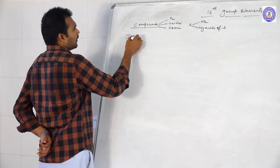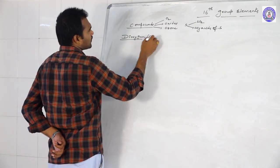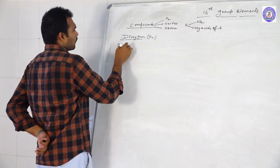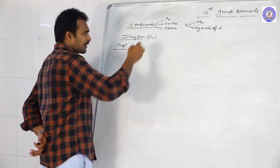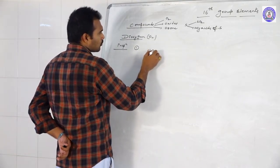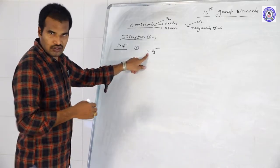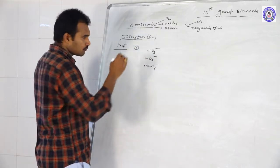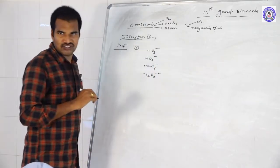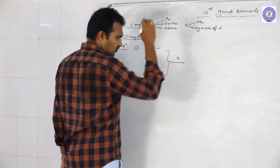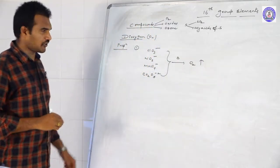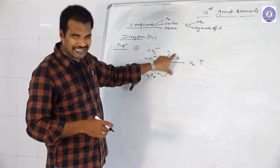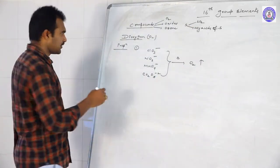The first one is Dioxygen. I'll give you the important points about Dioxygen — how to easily remember the preparation methods of Oxygen. We can prepare Dioxygen by using a Chlorate source (ClO3-), Nitrate source, Permanganates, or Dichromates. On thermal decomposition, any one of these salts — Potassium Chlorate, Potassium Nitrate, Potassium Permanganate, Potassium Dichromate — when heated, they thermally decompose and produce Oxygen gas.